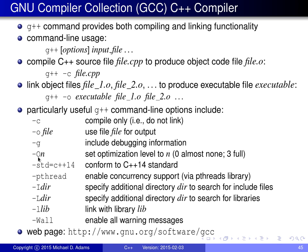The -O option specifies the optimization level. -O0 corresponds to no optimization (or almost none), while -O1, -O2, and -O3 correspond to increasing levels, with -O3 being full optimization. The -std option specifies which version of the C++ standard to compile with. There are various versions: C++98 was the first ISO standard, followed by C++11 and C++14. C++14 was the most recent version at the time of this presentation.